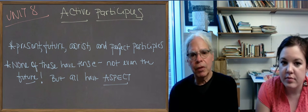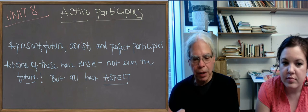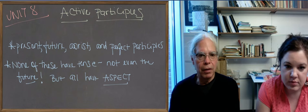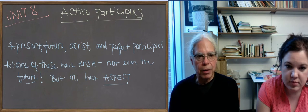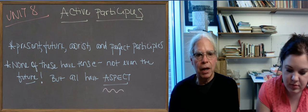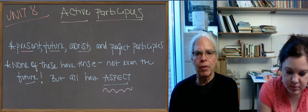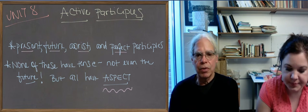So the first thing to realize is that in addition to voice—that is active, middle, and passive—participles have aspect. We're going to learn how to form present, future, aorist, and perfect participles, all of them active in this first chunk.